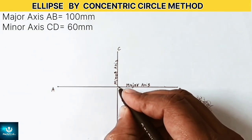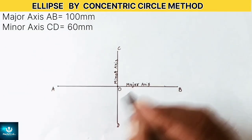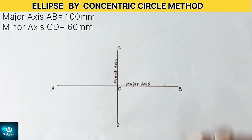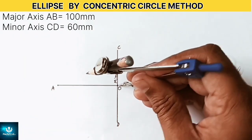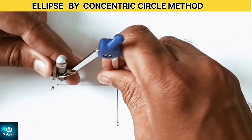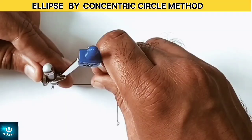Now with O as the center draw a circle such that AB becomes its diameter representing the major axis.